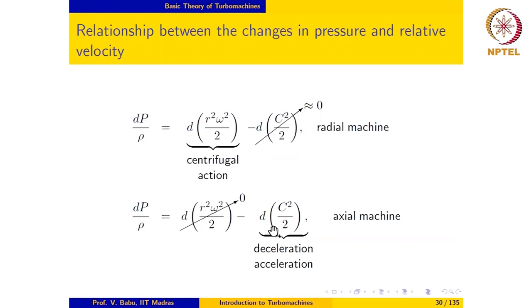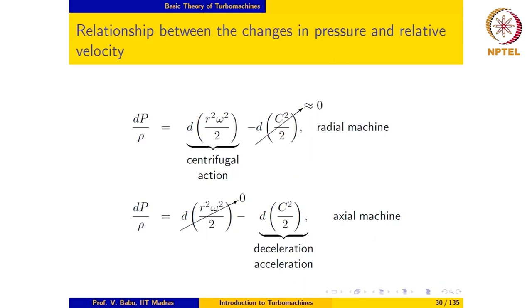Now it is clear from this discussion that when work transfer takes place to a rotor, the absolute velocity of the fluid, the relative velocity of the fluid, as well as the blade velocity in the case of a radial machine, can change between the inlet and the outlet of the rotor. We have also seen that it is customary to indicate these velocities by means of a velocity triangle, since the absolute velocity V at any location is the vector sum of the blade velocity plus the relative velocity. So it is imperative that we gain a clear understanding of velocity triangles and be in a position to interpret them and get as much information from them as possible.